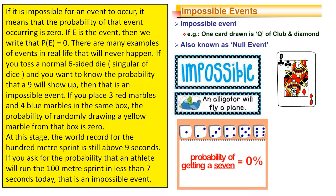If it is impossible for an event to occur, it means that the probability of that event occurring is zero. If E is the event, then we write that P(E) equals zero.